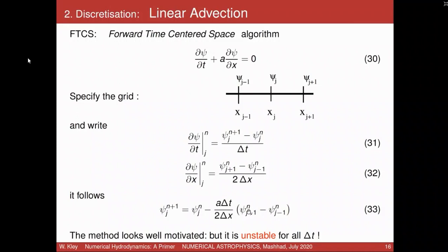This gives us the scheme psi_J^{n+1} equals psi_J^n minus this expression with the centered spatial derivative. This method looks very well motivated: it has a spatially centered derivative on the right-hand side — second order in space and first order in time. But the scheme is unstable for all delta_t, so it's not usable. This is the problem with quite a few numerical schemes: they look very nice and are derived from the equations by Taylor expansion, but they are unstable.